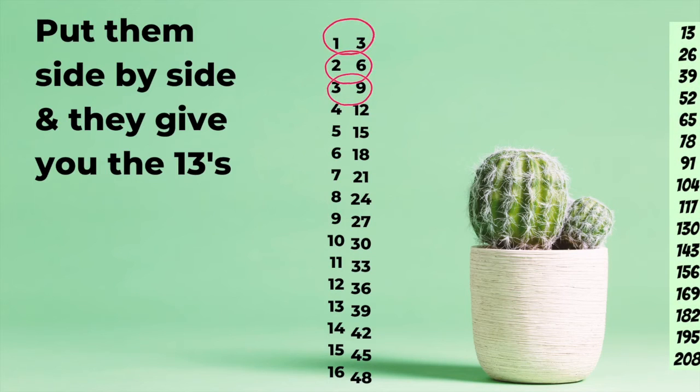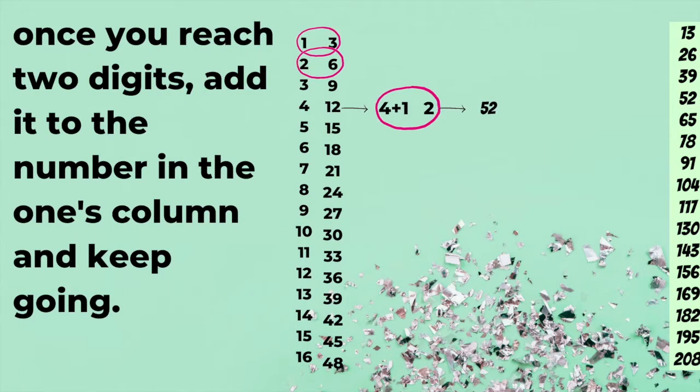And then you reach two digits on the threes side. When that happens, you just add that digit to the four and then keep going. So, that becomes 52. Next one becomes 65. And then 78. And then 91.